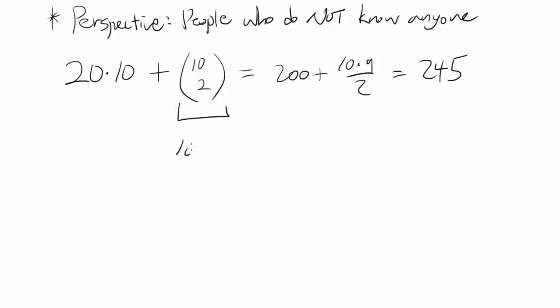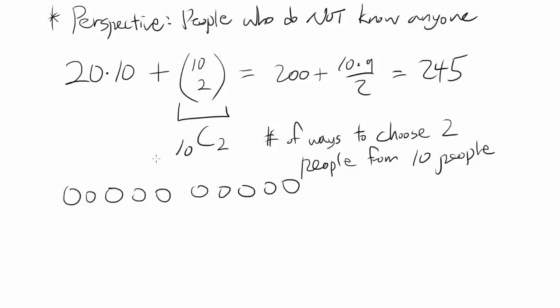10 choose 2, also written like this, is the number of ways to choose the second number, to choose in this case 2, 2 people from 10 people. This is what we want because you have 10 people going on.